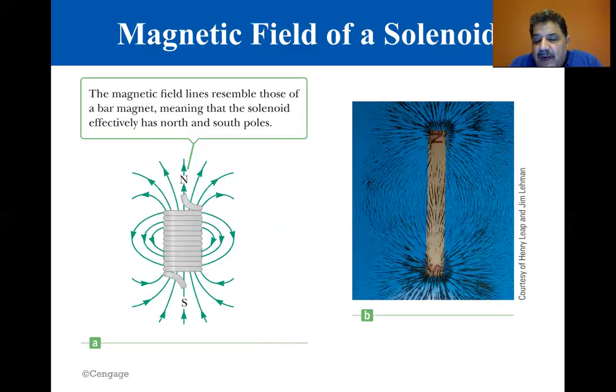The more widely separated the field lines are, the weaker the field. At the same time, the field inside the solenoid is much stronger. Here, the lines are close together. Also, the field inside the solenoid has a constant magnitude at all points far from its end. So we can apply Ampere's law to the solenoid, which results in the equation B equals mu zero N times I. This is for the field inside the solenoid, where N is the number of turns per unit length of the solenoid.